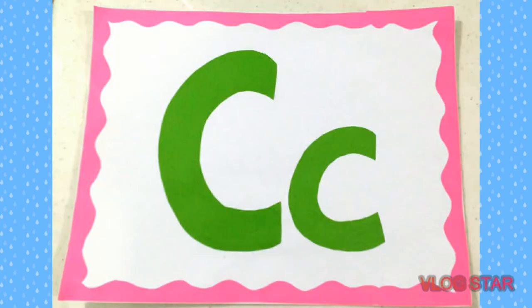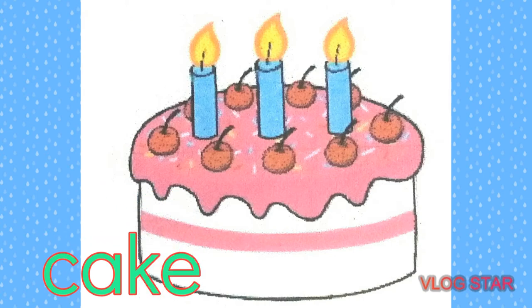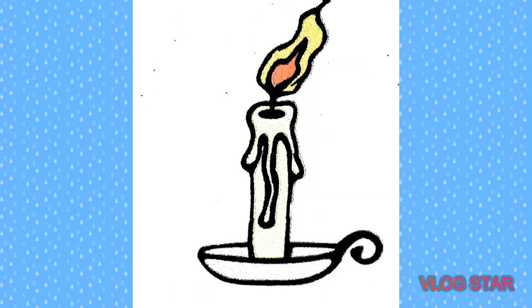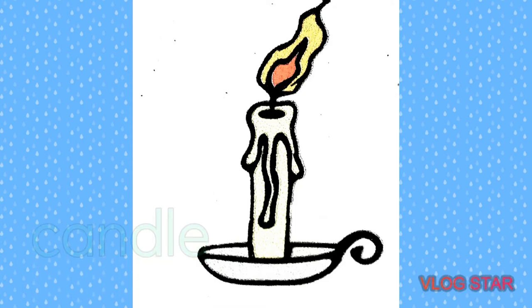Now I'm going to show you some pictures that begin with the letter C, sound K. Cake — it is a sweet food. Birthday cake is a cake eaten as part of a birthday celebration. Say cake. Candle — it provides light and is mostly used for decorative and ceremonial purposes. Candle.